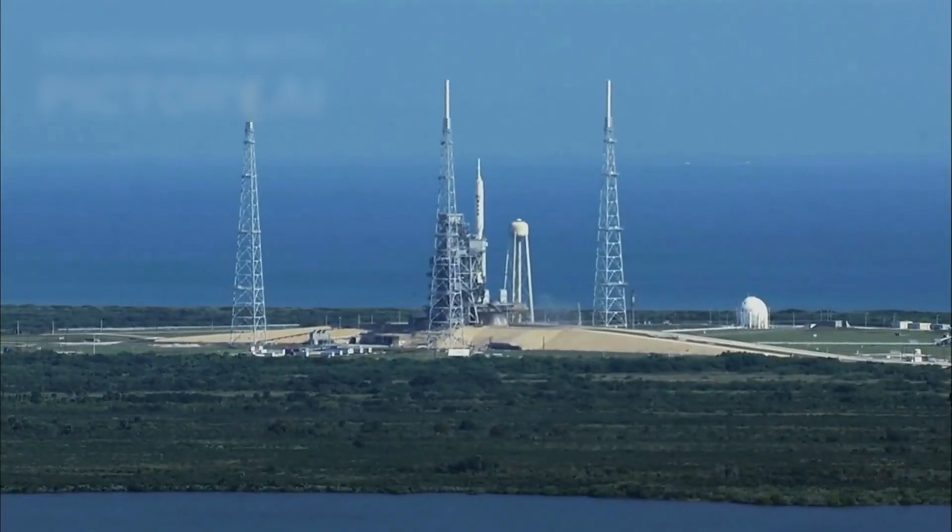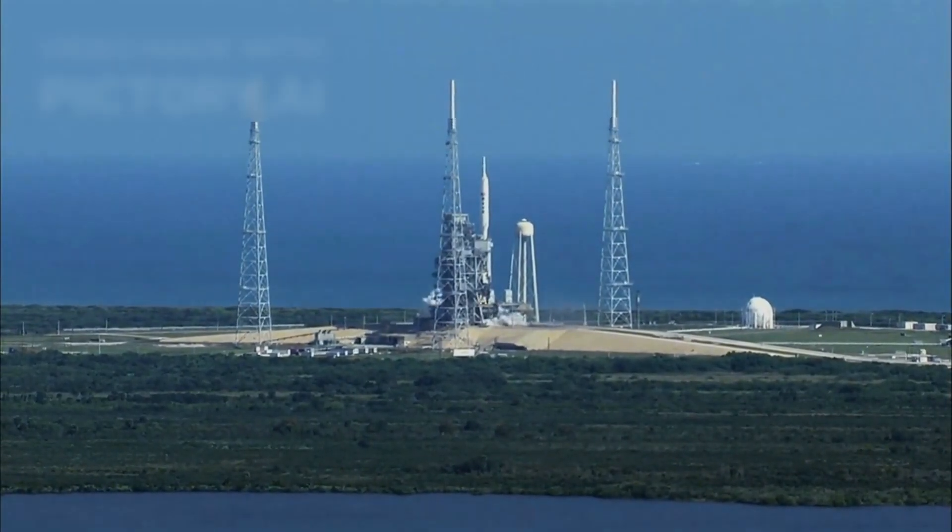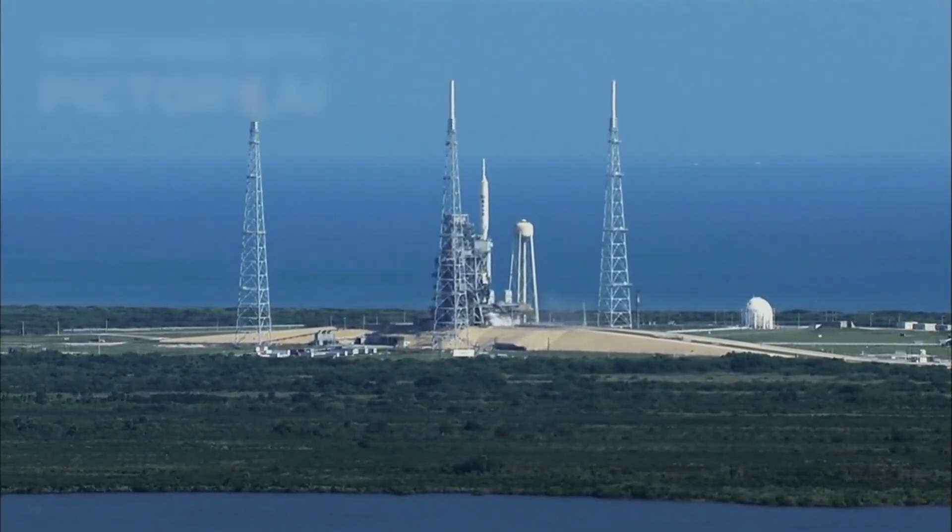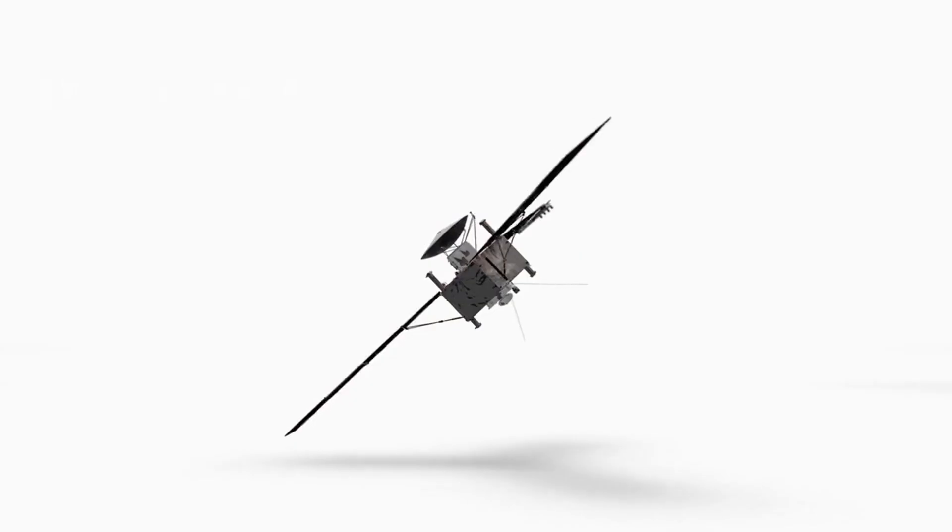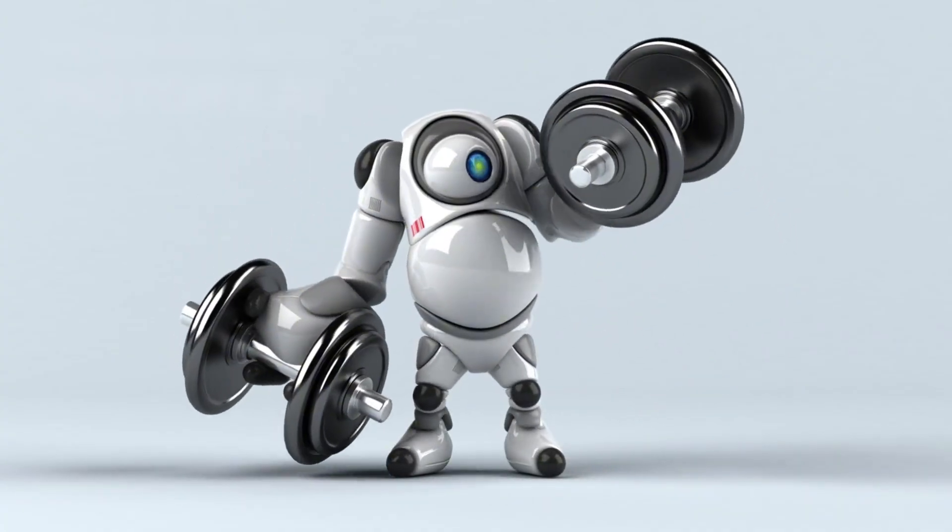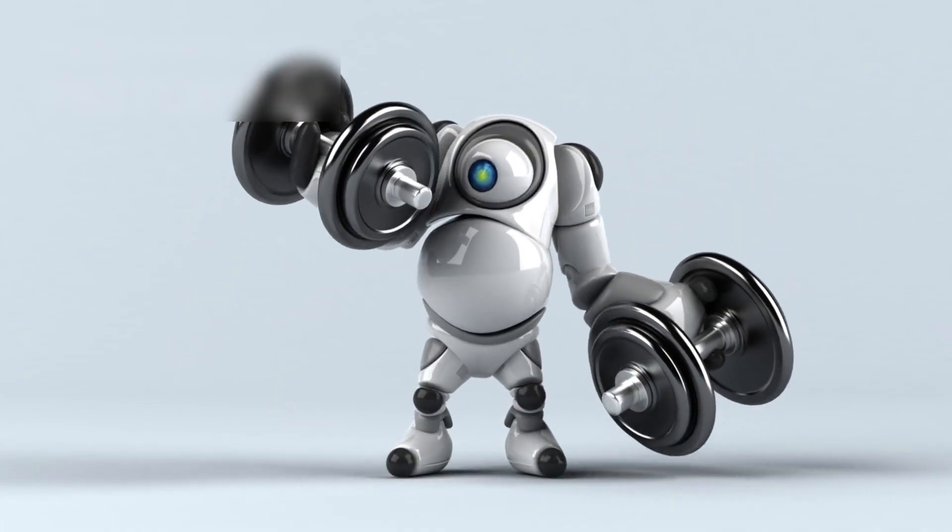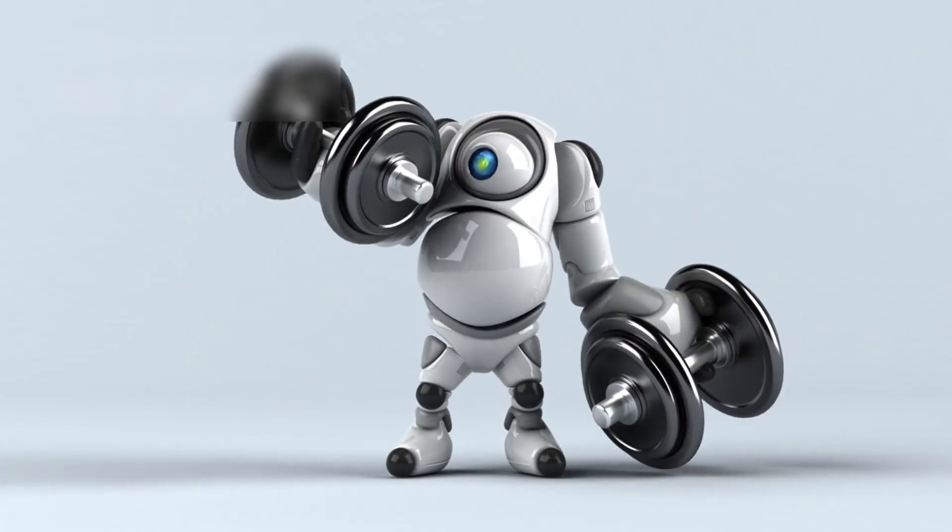On September 5, 1977, humanity launched a small, unassuming spacecraft into the vastness of space. Its name was Voyager 1. No bigger than a compact car, this robotic emissary carried no crew, no return plan, and no certainty of survival.